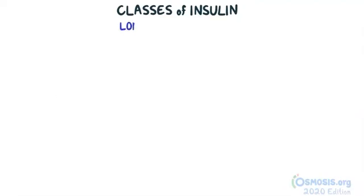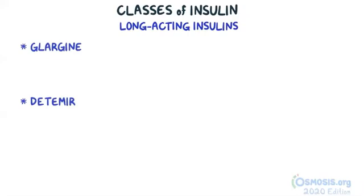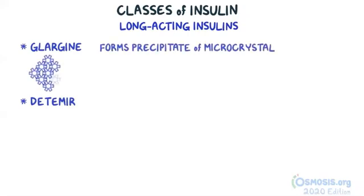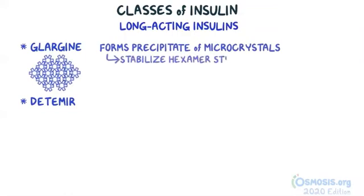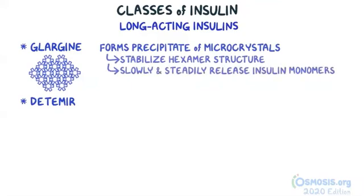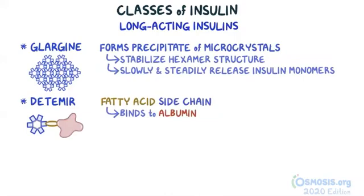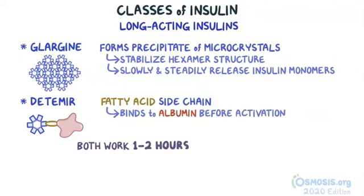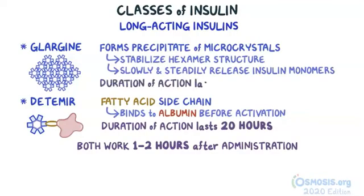The long-acting insulins include insulin glargine and detemir. Glargine is unique because once injected, it forms a precipitate of microcrystals at the site of injection, which significantly stabilizes insulin's natural hexamer structure, allowing it to slowly and steadily release insulin monomers into the bloodstream. Detemir has a fatty acid side chain, which allows it to bind to albumin for a time before dissociating and becoming active. Both begin to work within 1-2 hours; detemir typically lasts around 20 hours, whereas glargine lasts up to 24 hours. These medications do not have a peak effect.